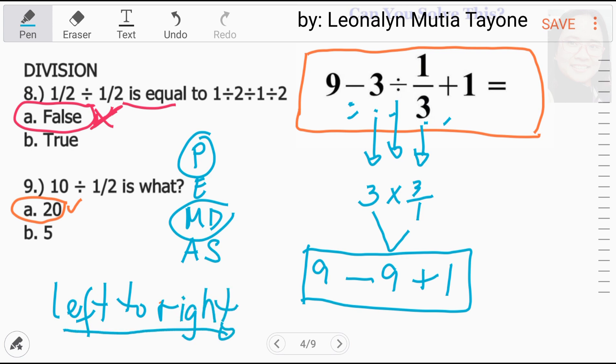Hindi nila alam na meron pang left to right sa method nito. Kinalimutan na si left to right. Si multiplication at division rank equal yan. Ganun din si addition at subtraction. Rank equal yan siya. So, kung alin ang mauna. Kung sakaling hindi kayo convinced na pwedeng unahin natin si subtraction, please, watch nyo yung part 1 ng video ito. Kasi, malinaw na pinaliwanag doon. So, 9 minus 9, that is 0. Plus 1 equals 1.